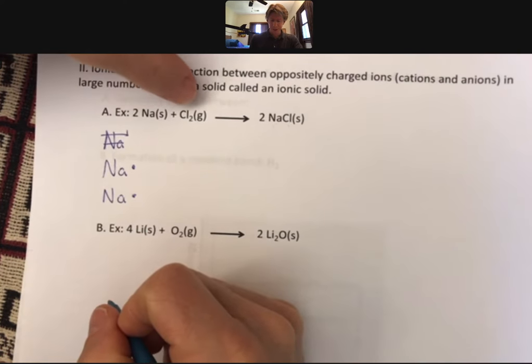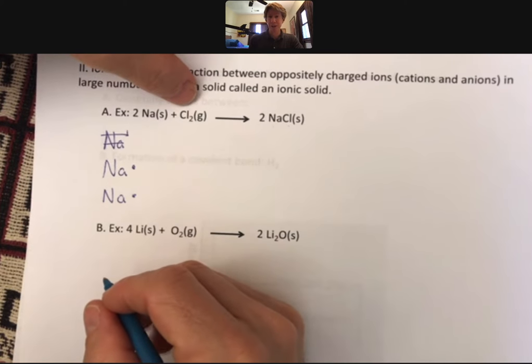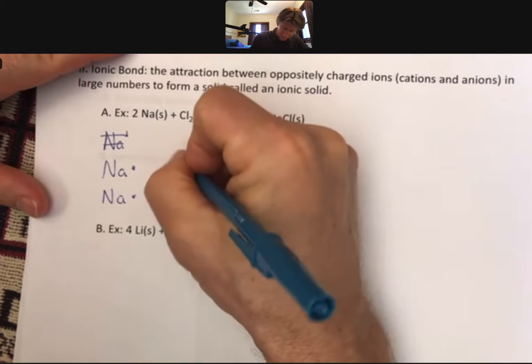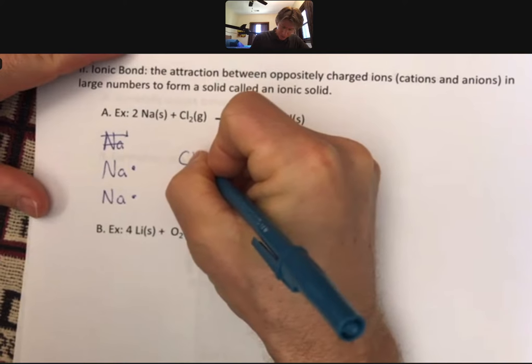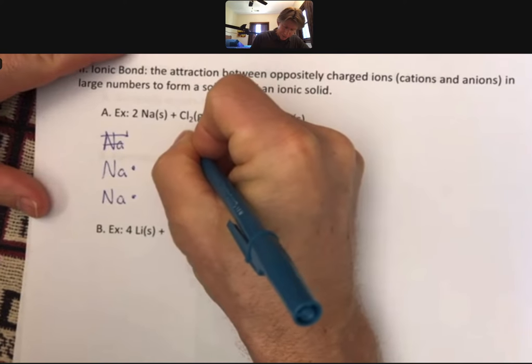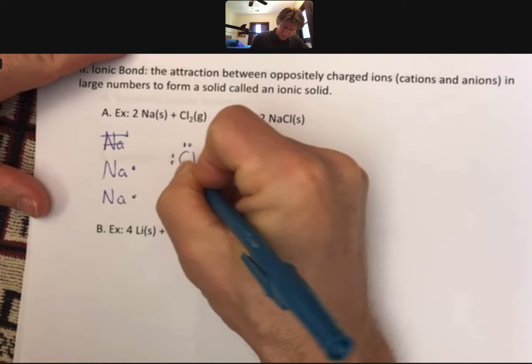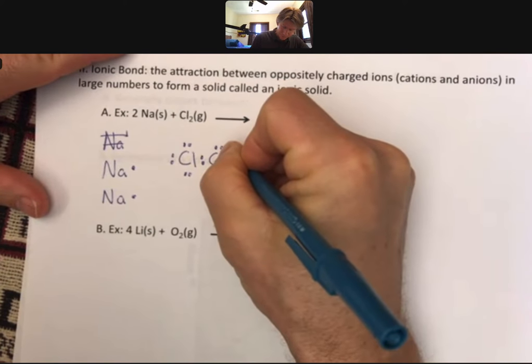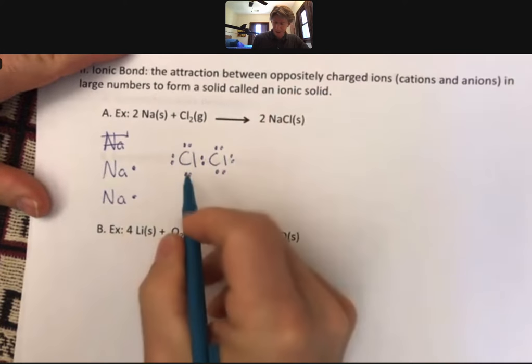Then we have chlorine here, which actually has a covalent bond in it. What we can imagine for now, although we have a lot more to say, is that Cl2...